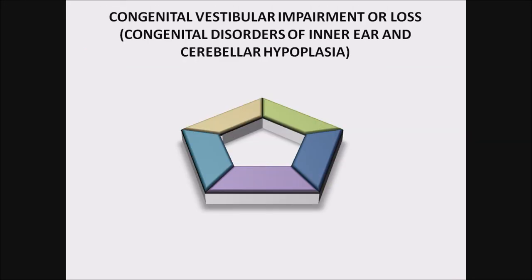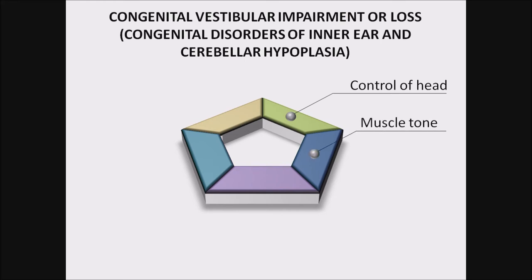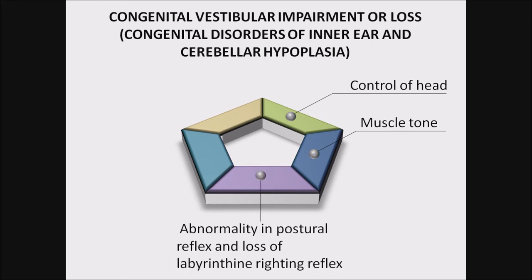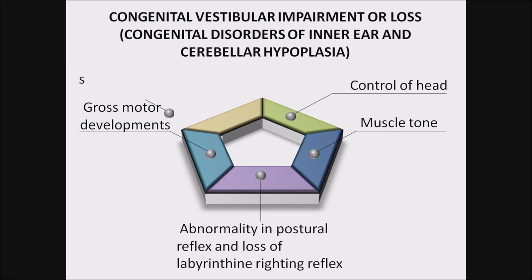Congenital vestibular impairment or loss: control of the head is delayed and the head usually flops backwards when the infant is in a sitting position. Lower muscle tone, abnormality in postural reflex, and loss of labyrinthine righting reflex — but this reflex recovery becomes faster through other routes such as vision and non-labyrinthine reflex routes. Gross motor development is delayed. Symptoms include clumsiness, poor handwriting, slow reaction, and difficulty in maintaining balance.